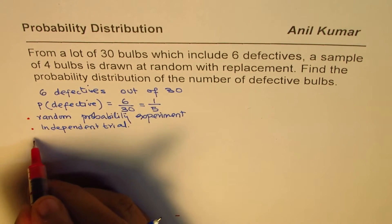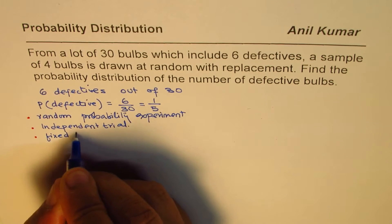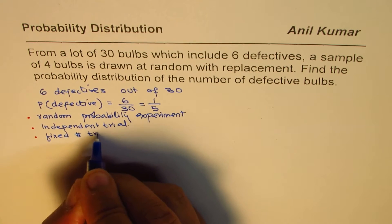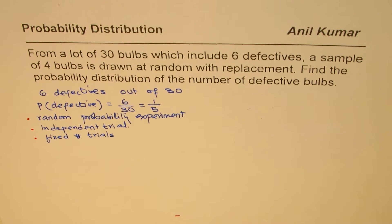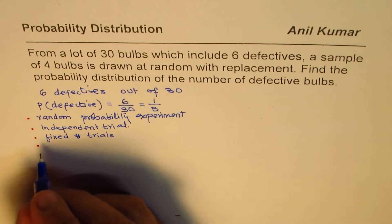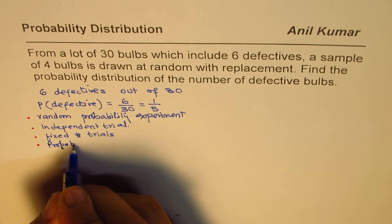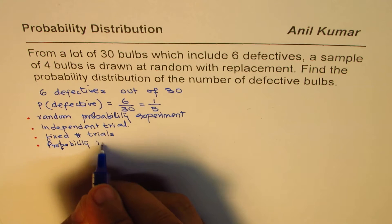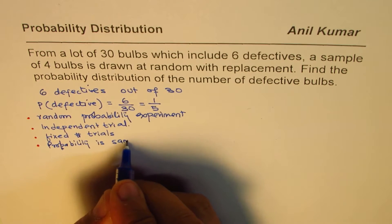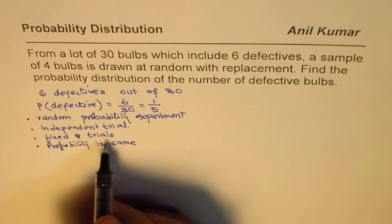We have a fixed number of trials, and the probability of defects — the probability — is the same in each trial.